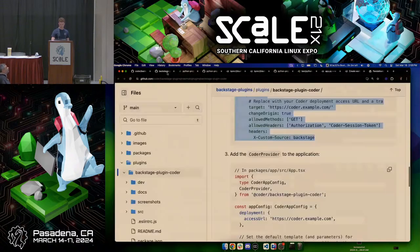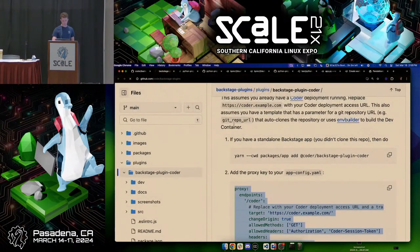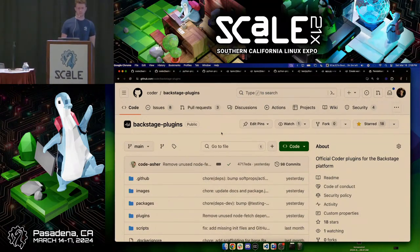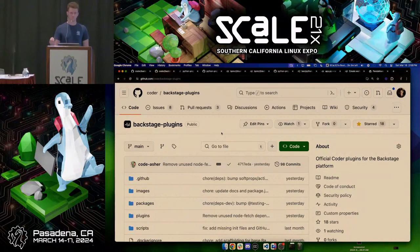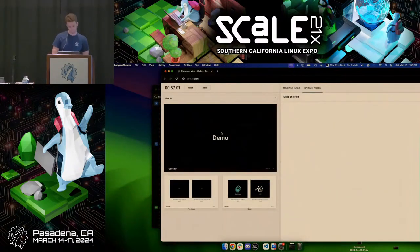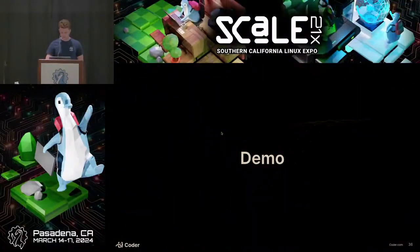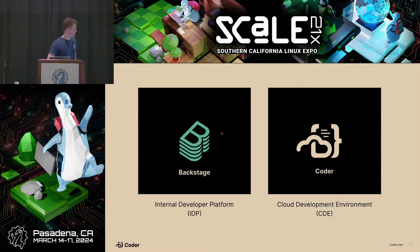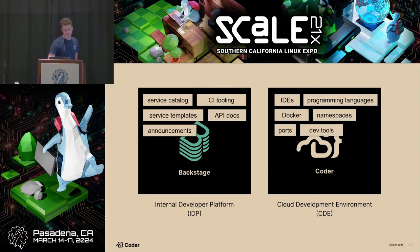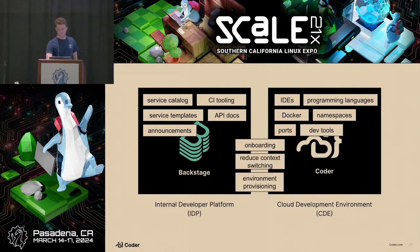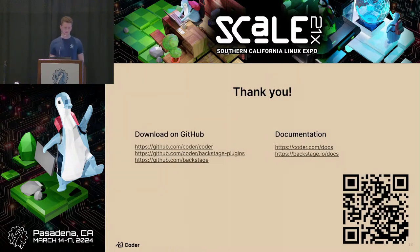Both of these plugins are open source and you can install them into your Backstage deployment today. It's a great way to add these extra steps to your workflow and solve the problem of developer setup. With that: you can use Backstage as an internal developer platform, Coder as a cloud developer environment. There's a lot these tools do differently, but together they solve concepts around onboarding, context switching, and provisioning environments. The QR code takes you to our Backstage plugins repo if you want to download or check out one of these plugins.